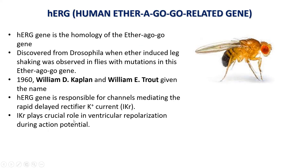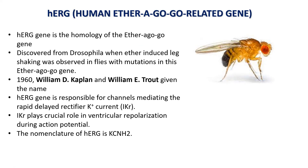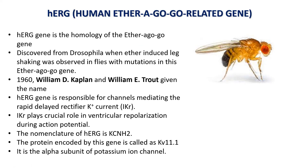This IKR plays a crucial role in ventricular repolarization during the action potential. The nomenclature of HERG is KCNH2 and the protein encoded by the gene is called KV11.1. It is the alpha subunit of the potassium ion channel, which contains this HERG gene — a homolog of the ether-a-go-go gene observed in Drosophila.